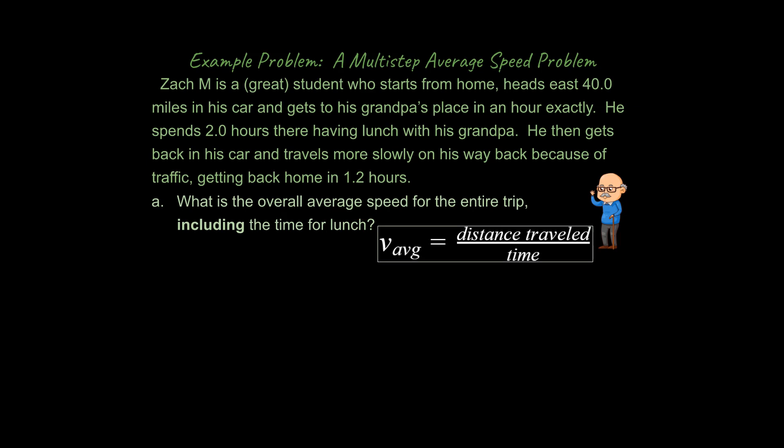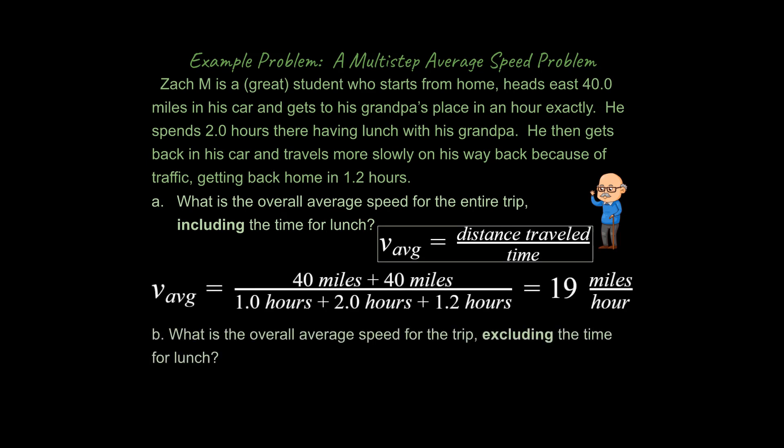So this is a little bit tougher problem that you might see in an average speed category. If we say average speed is equal to distance traveled divided by time, what we're going to do is say he travels 40 miles plus another 40 miles. Don't worry about direction. Don't make anything negative here. And if we're going to include the time for lunch, we literally just add up the hours that he is spending, even for lunch. And that sometimes gets confusing for students. So you've got 4.2 hours in the denominator. That simplifies to 19 miles per hour.